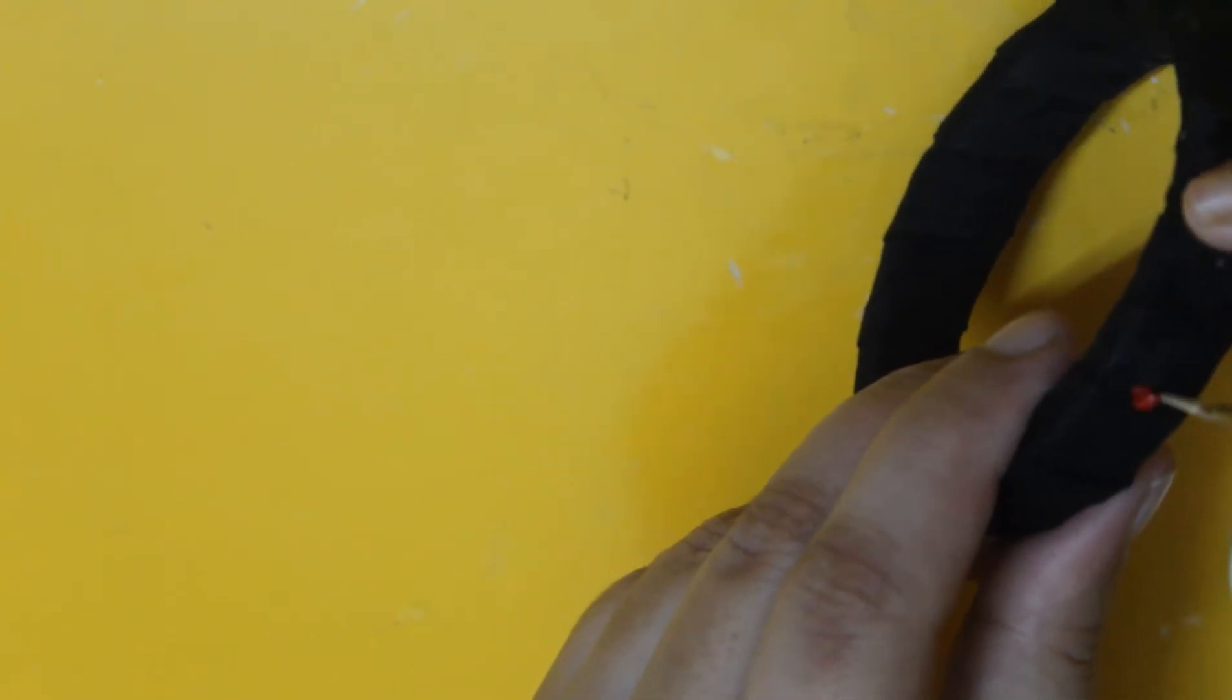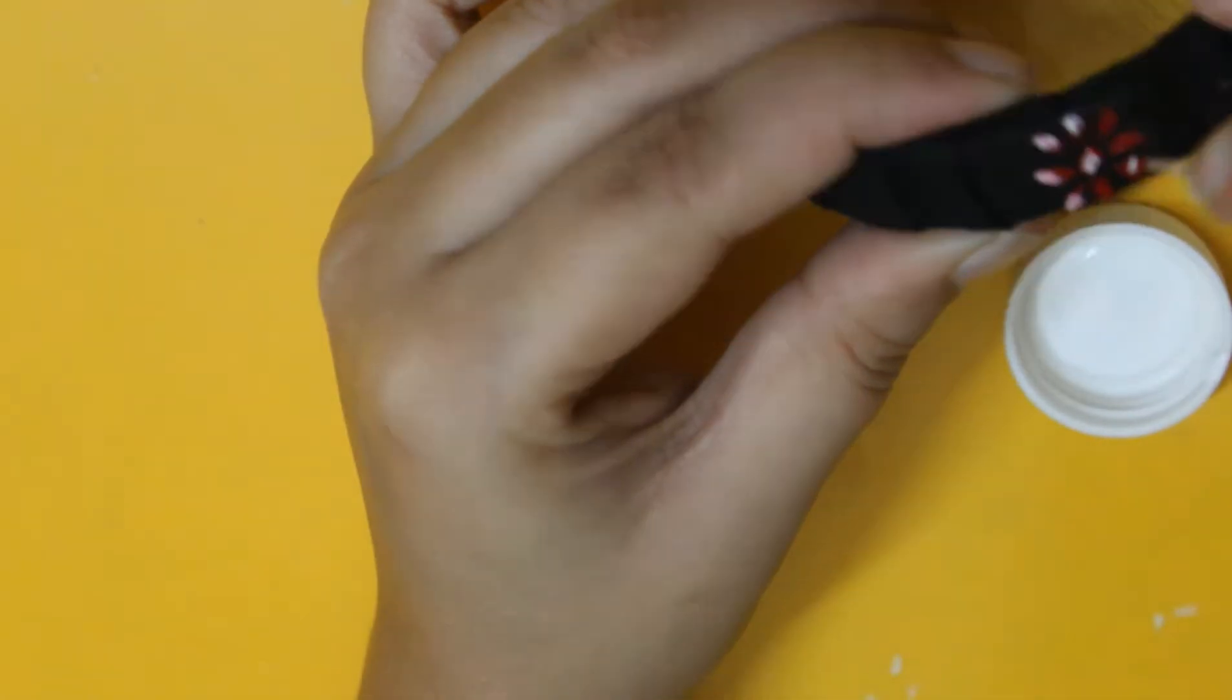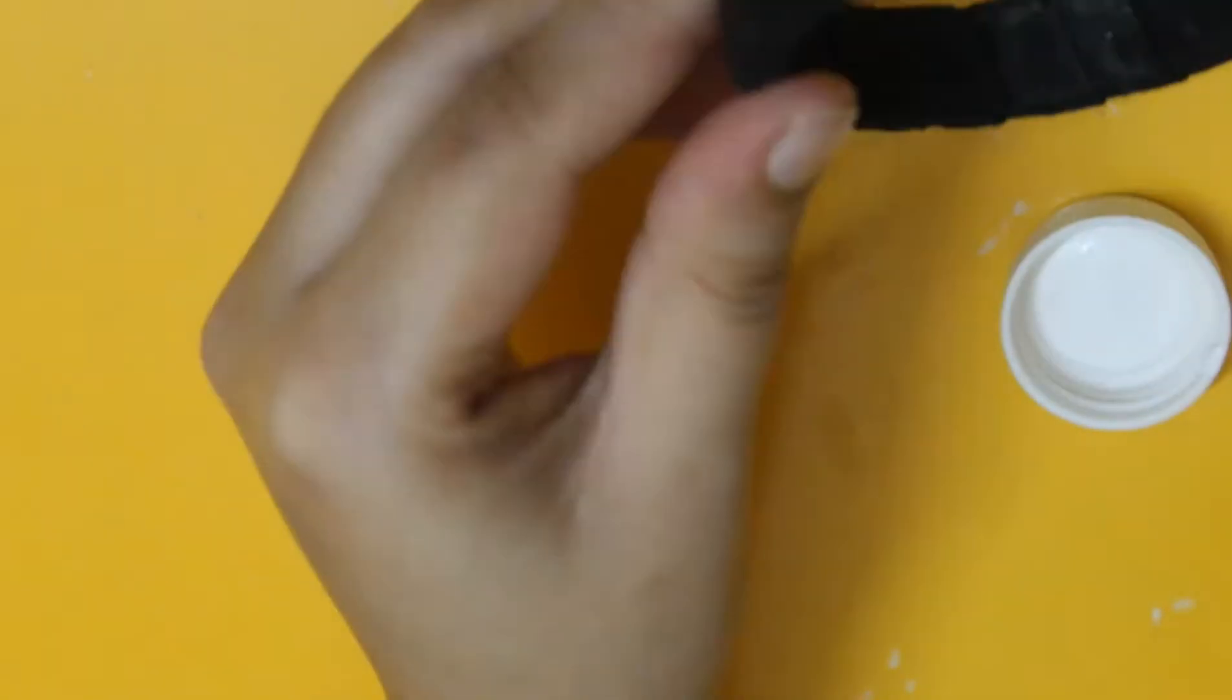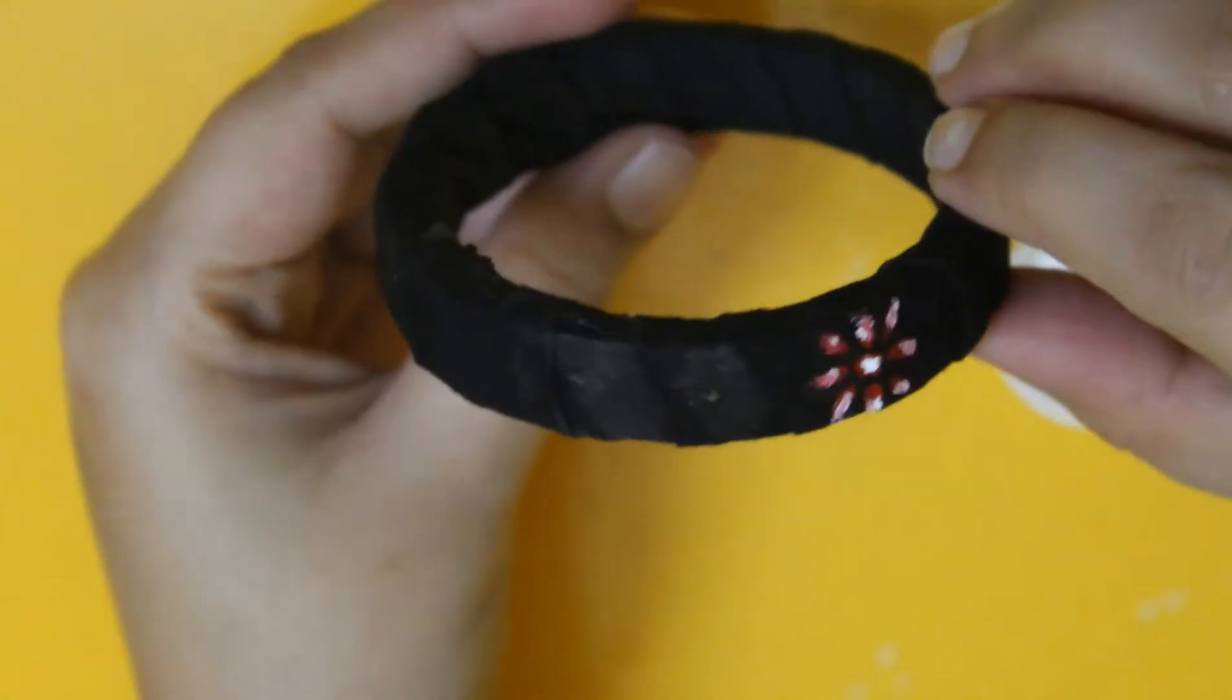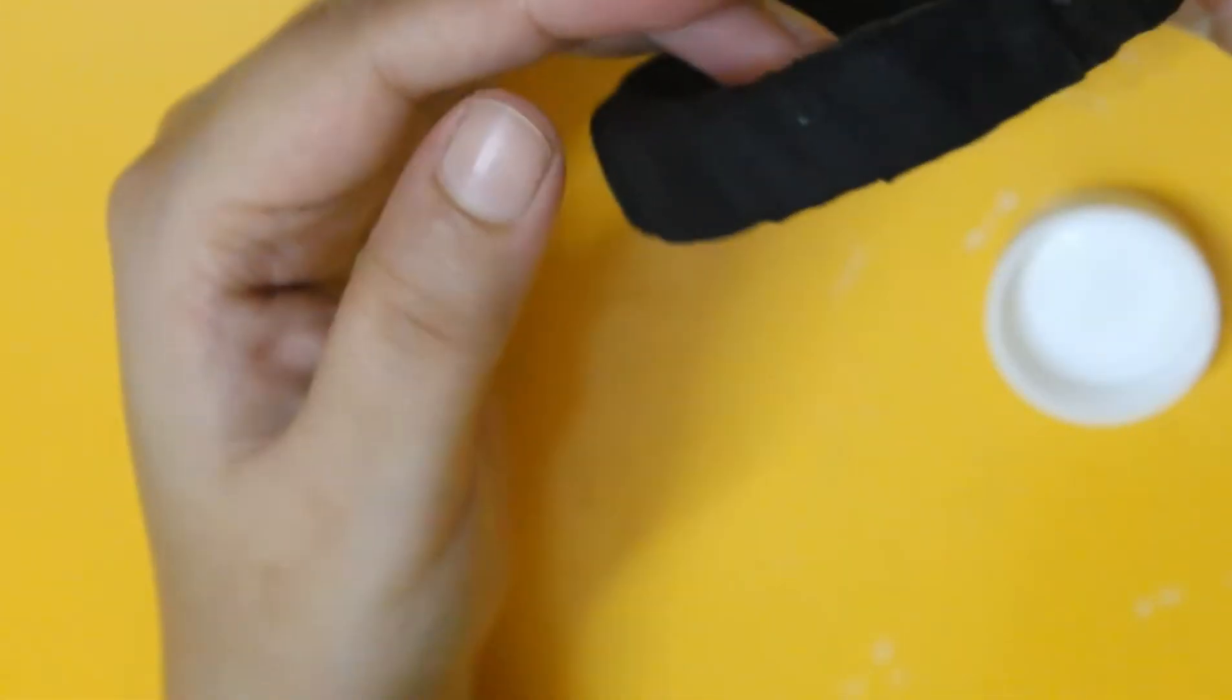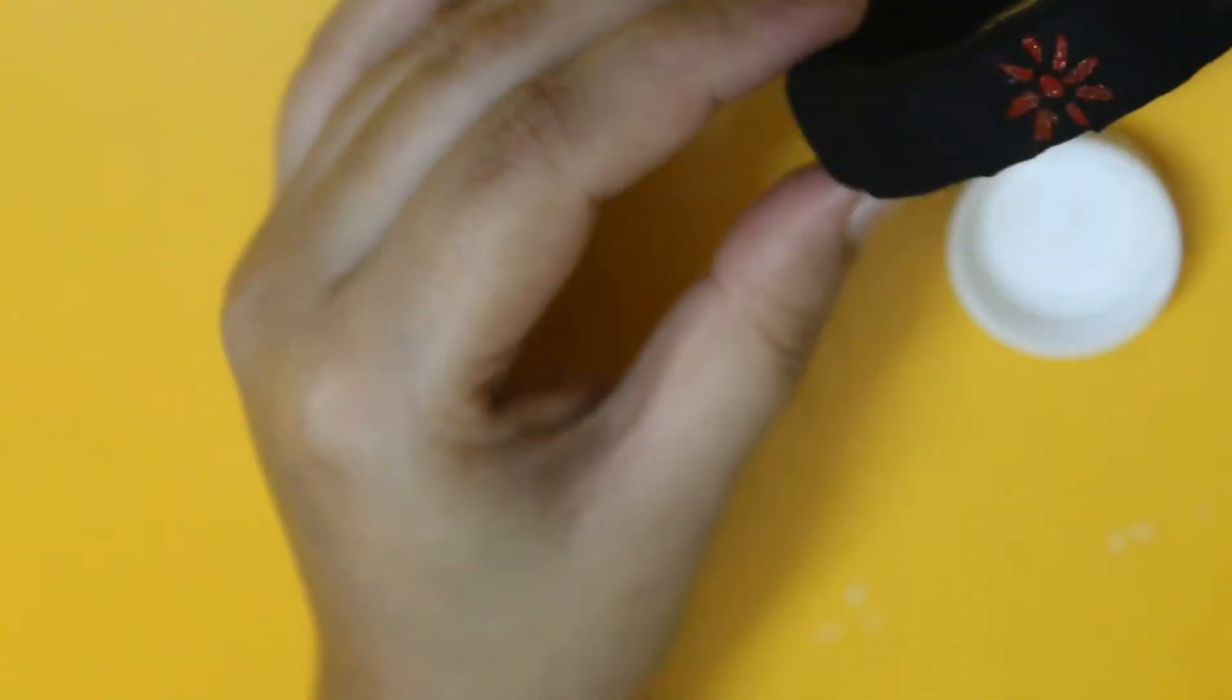The second flower has to be drawn exactly on the opposite side of the previous flower to maintain equal distance. I am drawing the next two flowers on the midpoint of the previous two flowers on both sides of the bangle.